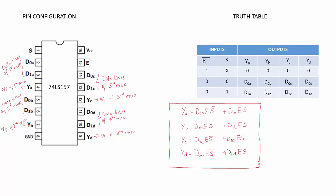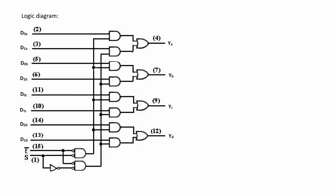So these are the output expressions. If we draw the logic diagram using basic gates it will give us the logic diagram of 74LS157 IC. You can see there are four outputs YA, YB, YC and YD, one select line and one active low enable input.